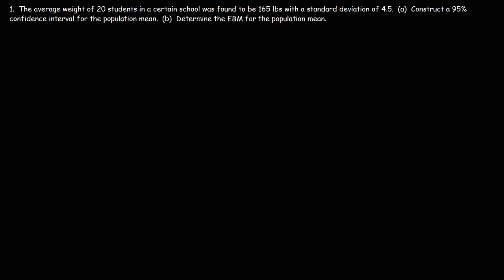So let's write down what we know. The average weight, or the sample mean, is 165 pounds. The sample size is 20. Now the standard deviation is 4.5, but here's a question: what type of standard deviation are we dealing with? Is this the sample standard deviation or the population standard deviation?